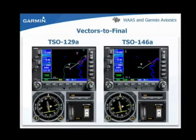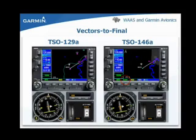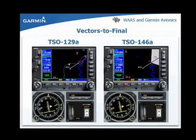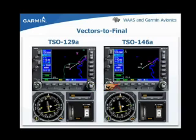It will be necessary to program the GPS Runway 22 approach by pressing the procedure key, selecting the approach with appropriate transition, and specifying vectors to final. Once we have activated vectors to final, we notice the SUSP or auto-suspend annunciation above the OBS or omnibearing selector key. Auto-suspend is active for vectors to final until the aircraft position has moved to the 2 side of the final approach fix, and the aircraft ground track is within 45 degrees of the published inbound course line. At this point, the auto-suspend annunciation will automatically extinguish.